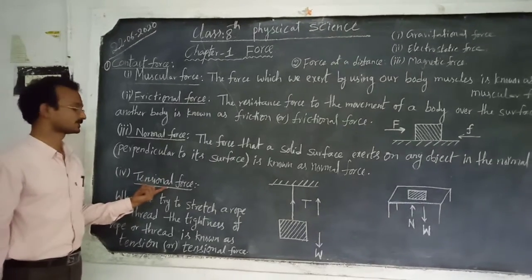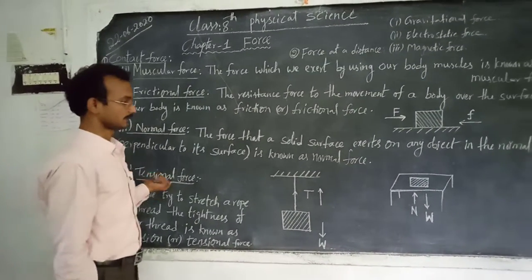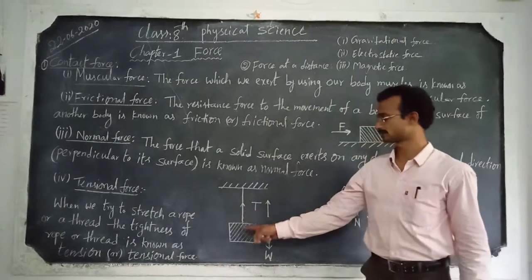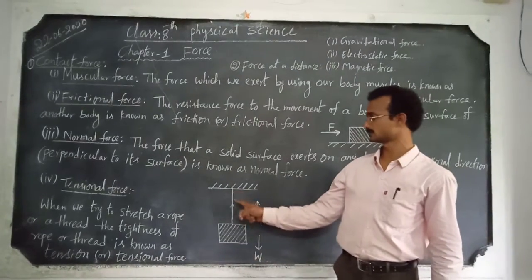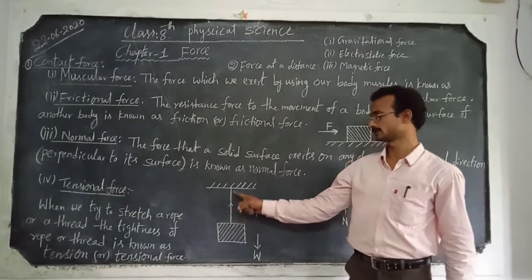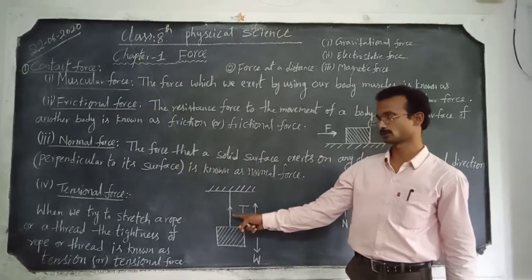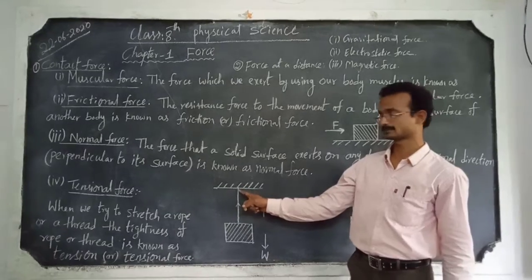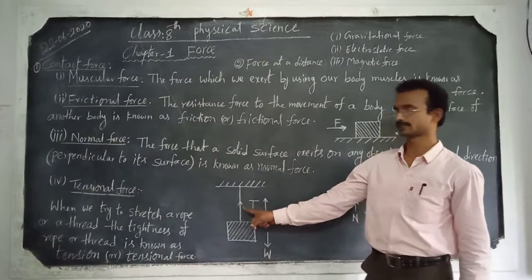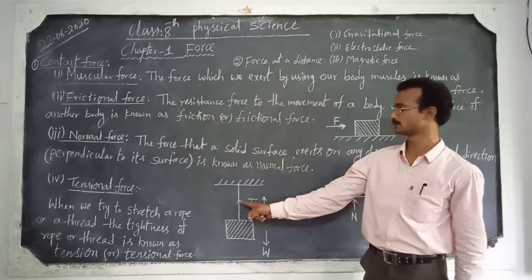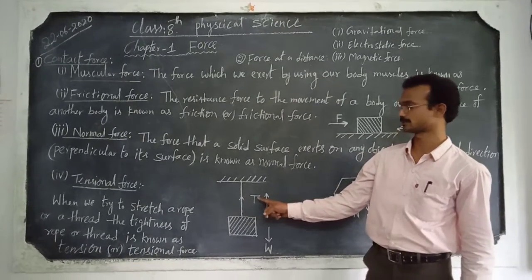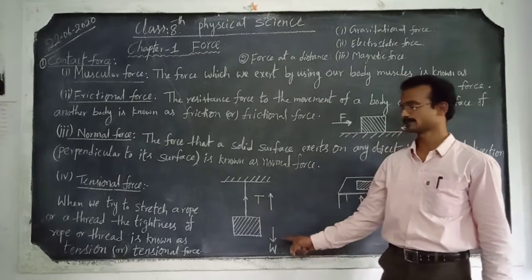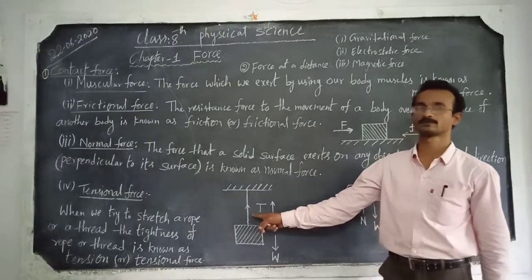The fourth one is tensile force. Consider a string or rope suspended with a certain weight. A tightness is formed in the string. The tightness formed in the string or rope when we try to stretch it is known as tensile force. Tensile force acts in the opposite direction to the weight of the body which is suspended from the string.